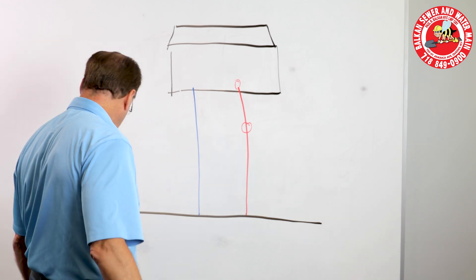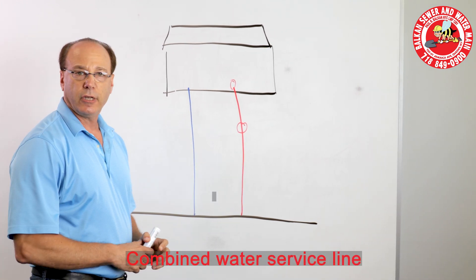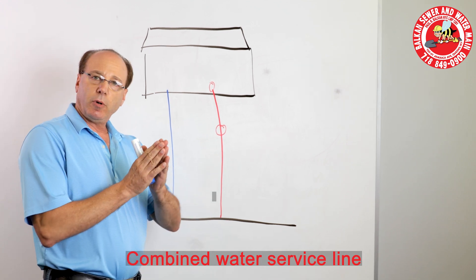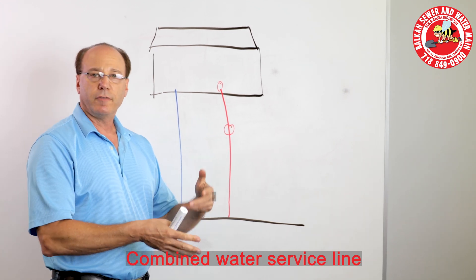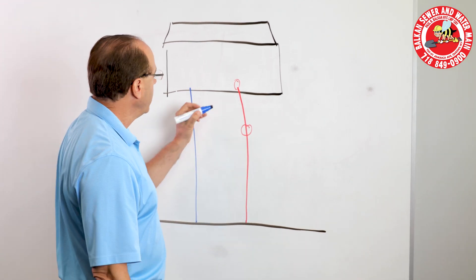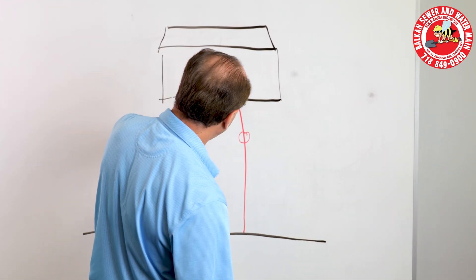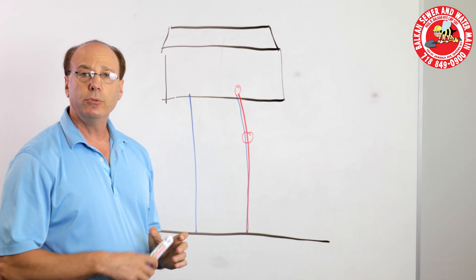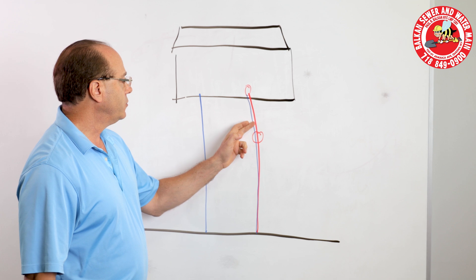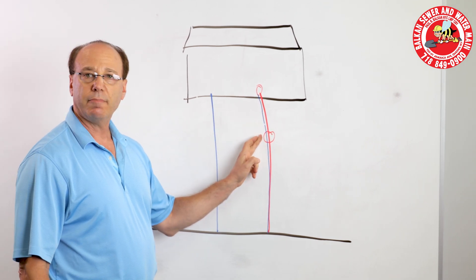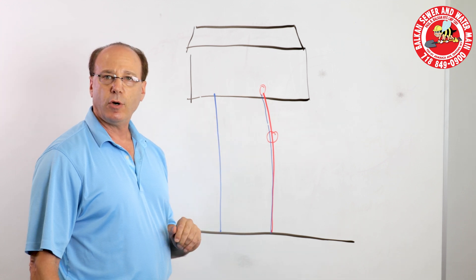Now, the last type of water line is actually known as a combined water line. That means it serves both your domestic use, meaning, you know, for your bathrooms, your toilets, and whatnot, and your fire sprinkler system. So, you could have a combined line. I'm just going to use the two colors. But, it's one line. And, as soon as it serves any type of fire protection, again, it has to have a curb valve and it has to have an OS and Y valve.